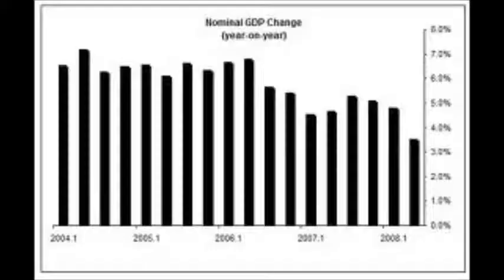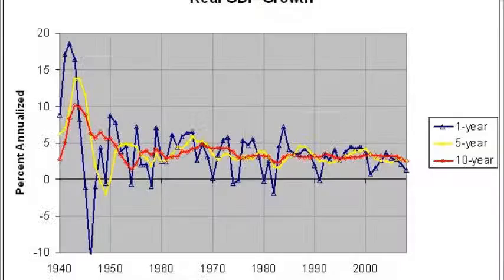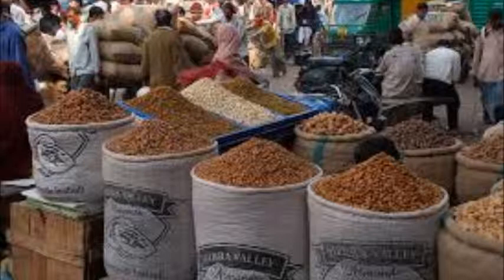Nominal GDP is measured in current prices. It does not account for price levels that increase from year to year, as you can see here in this real nominal GDP graph. Real GDP is GDP expressed in constant or unchanging dollars, as you see here in this graph.